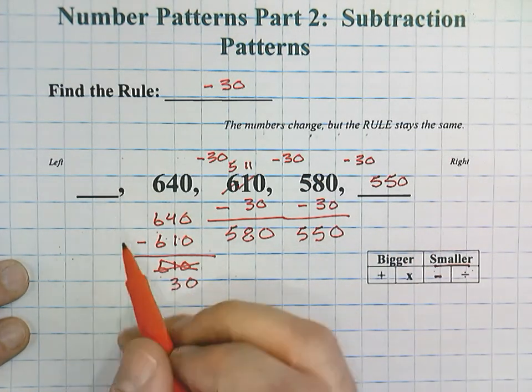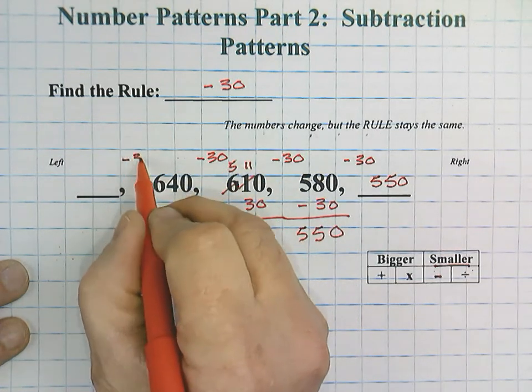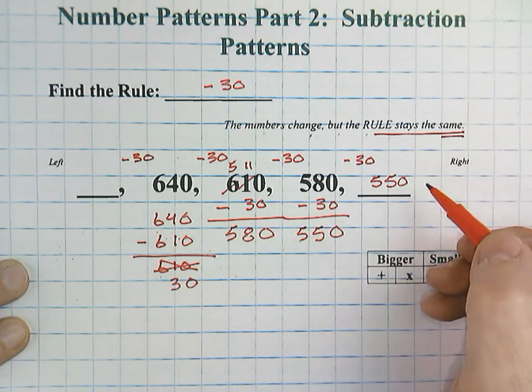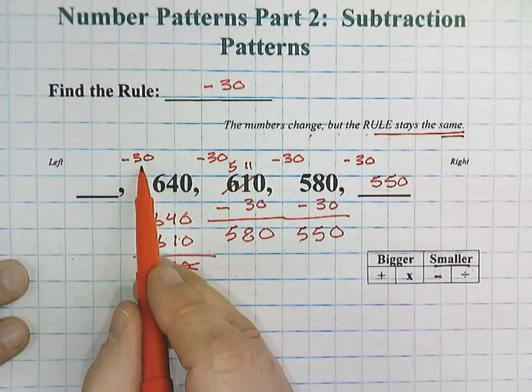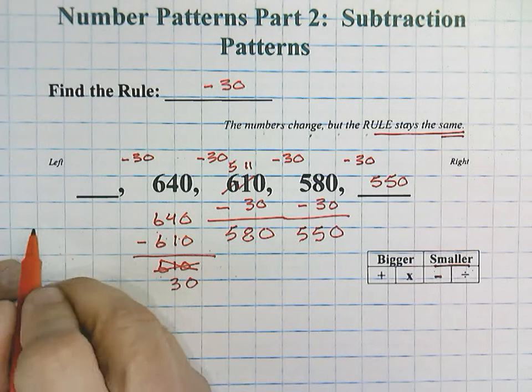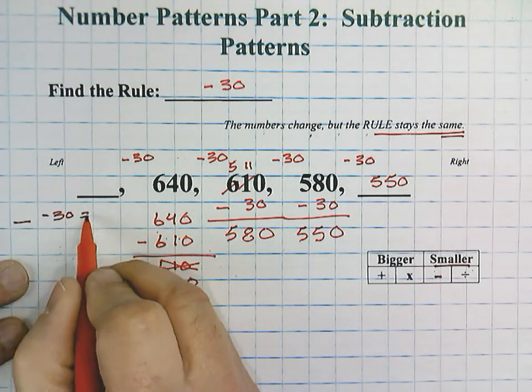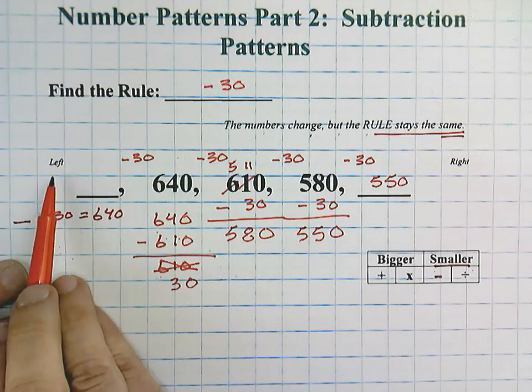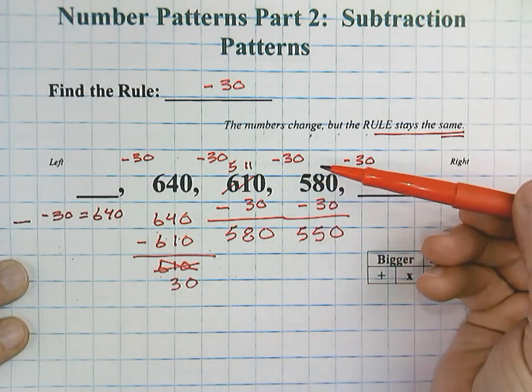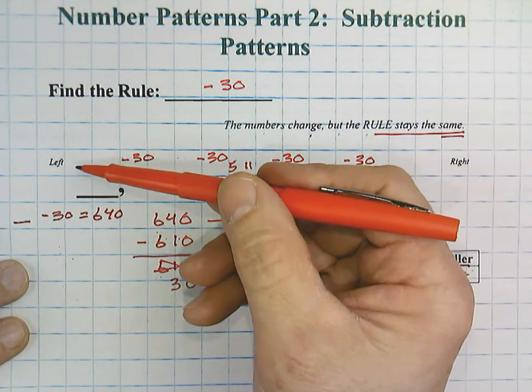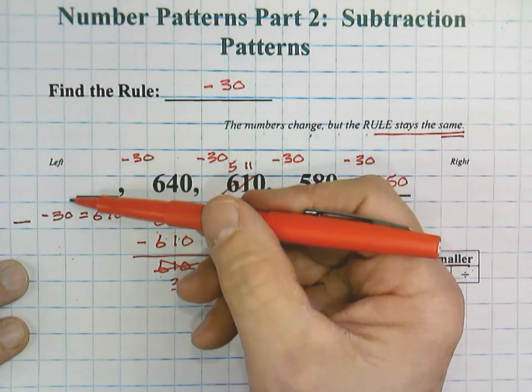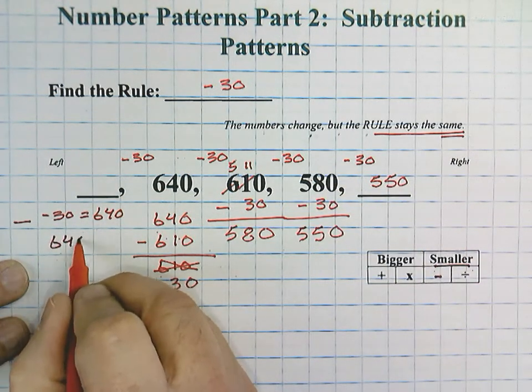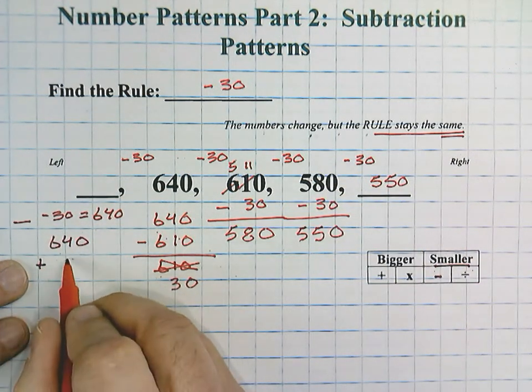We still have one more, but remember the rule stays the same. We said that the numbers change in a pattern, but the rule always stays the same. So, this time we have blank minus 30 equals 640. But we were working from left to right. This time we have to work from right to left, which is opposite. So, instead of subtract, we're going to do the opposite. We're going to add.